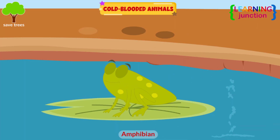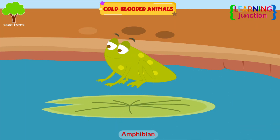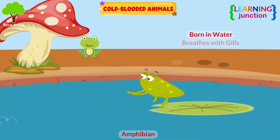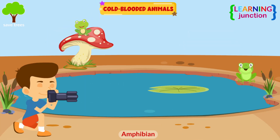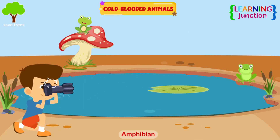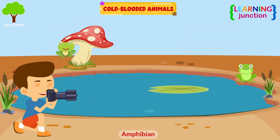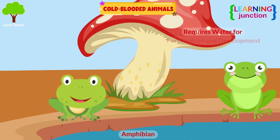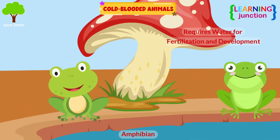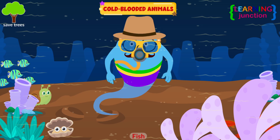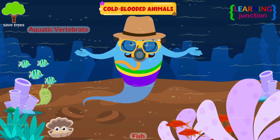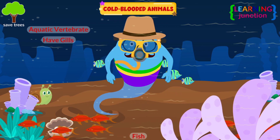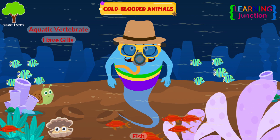An amphibian is a cold-blooded vertebrate animal that is born in water and breathes with gills. Look at the frog. It typically lives on land, but requires water for fertilization and development.